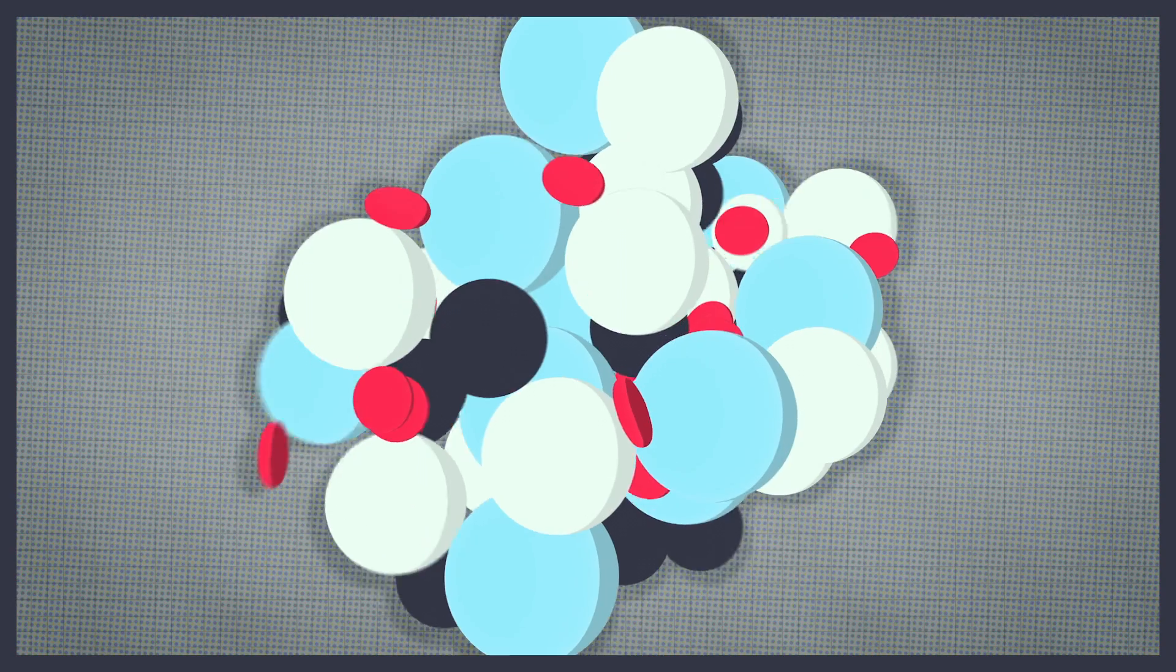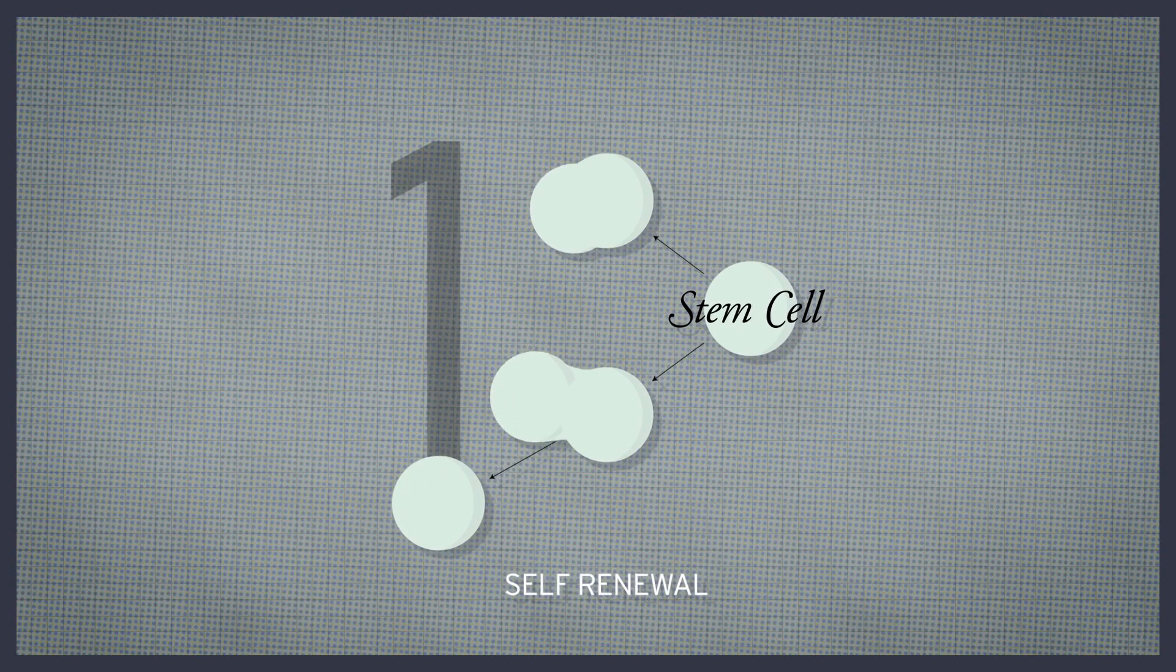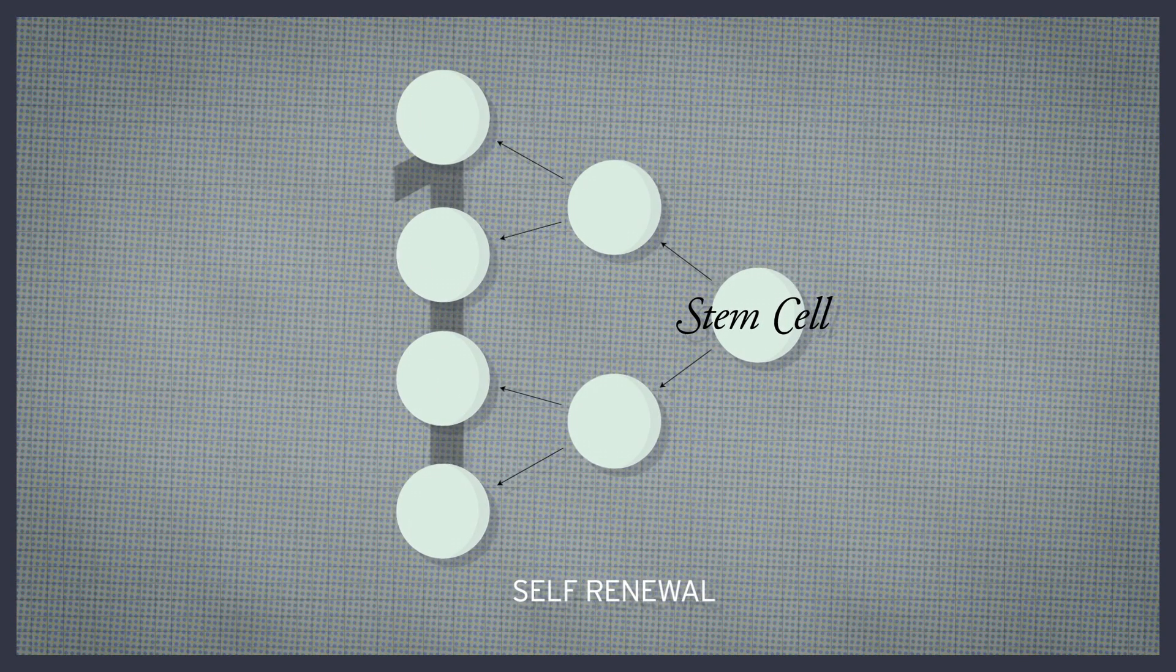These experiments revealed two defining properties of a stem cell. First, a stem cell must be able to self-renew. That is, it must be able to divide and give rise to more cells like itself.